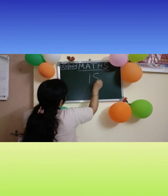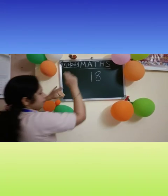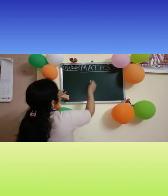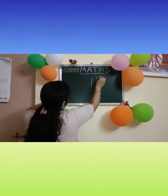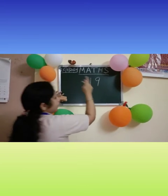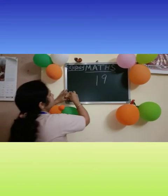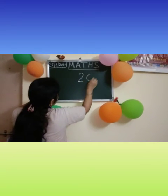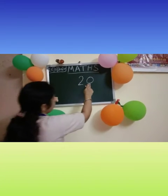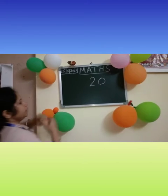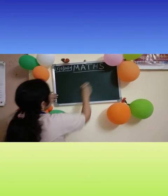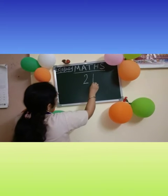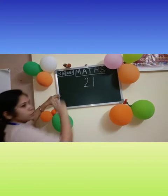1 and 8, 1, 8, 18. Now loudly children repeat with me. 1 and 9, 1, 9, 19. Now next number 2 and 0, 2, 0, 20. 2, 0, 20. Then next 2 and 1, 2, 1, 21.